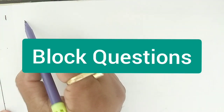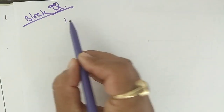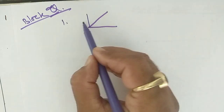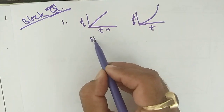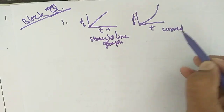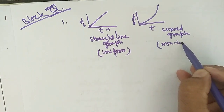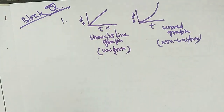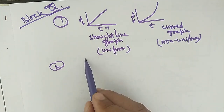Now let's discuss some block questions from the book. First question: What is the nature of the distance-time graph for uniform and non-uniform motion? For uniform motion, it is a straight-line graph. For non-uniform motion, it is a curved graph. Second question: What can you say about the motion of an object whose distance-time graph is a straight horizontal line? It represents that the body is at rest.